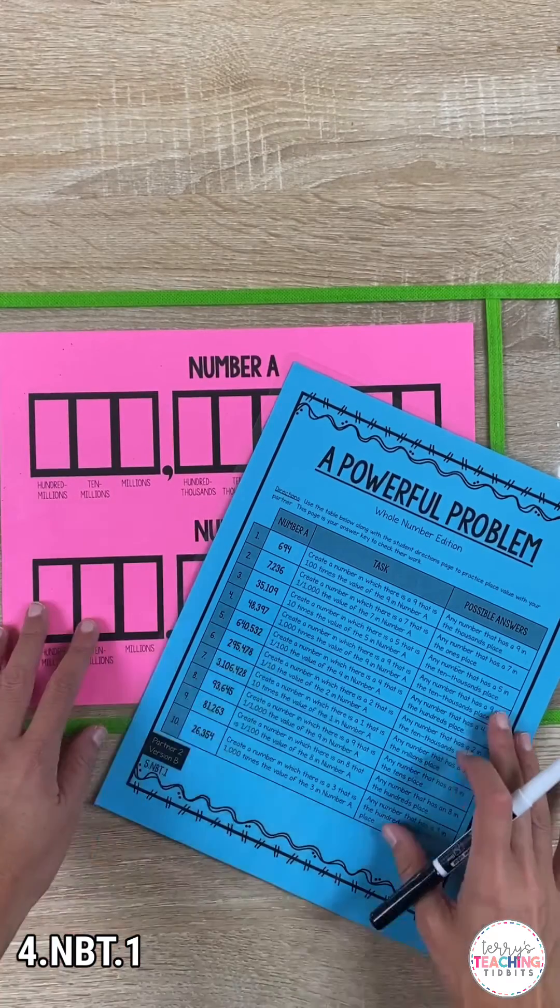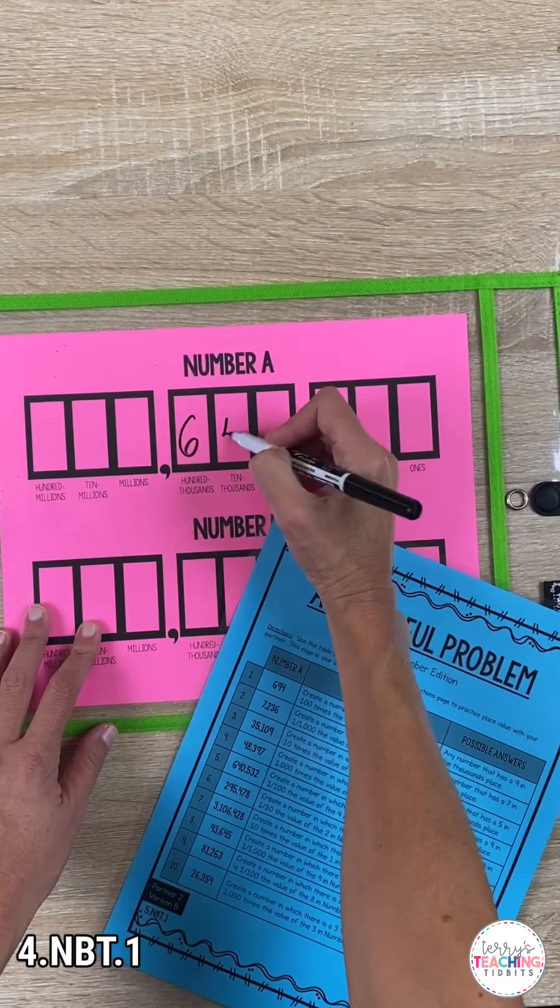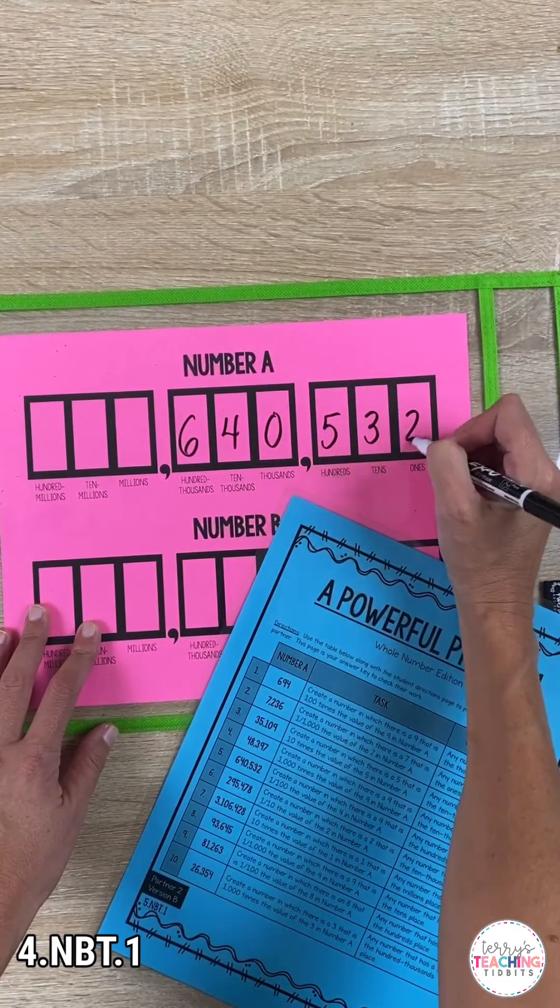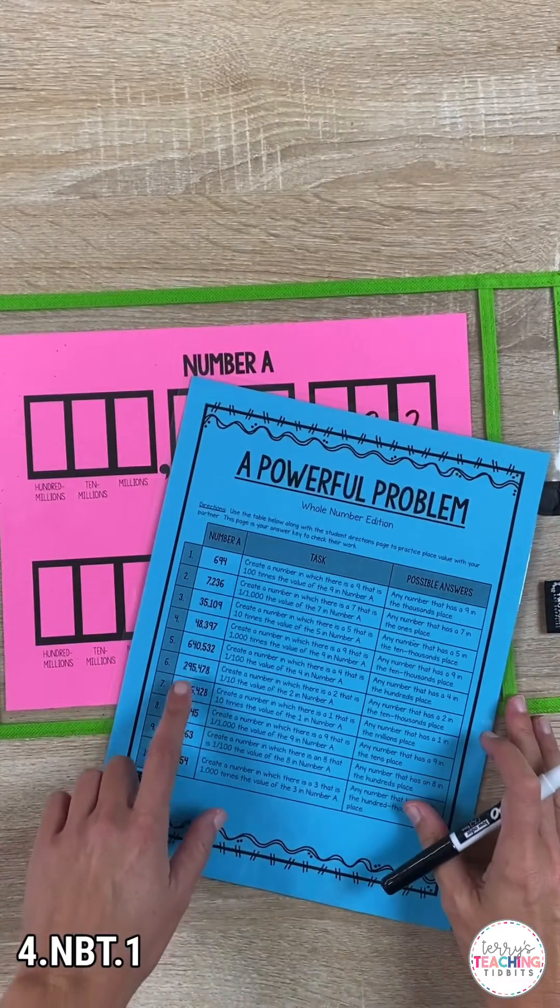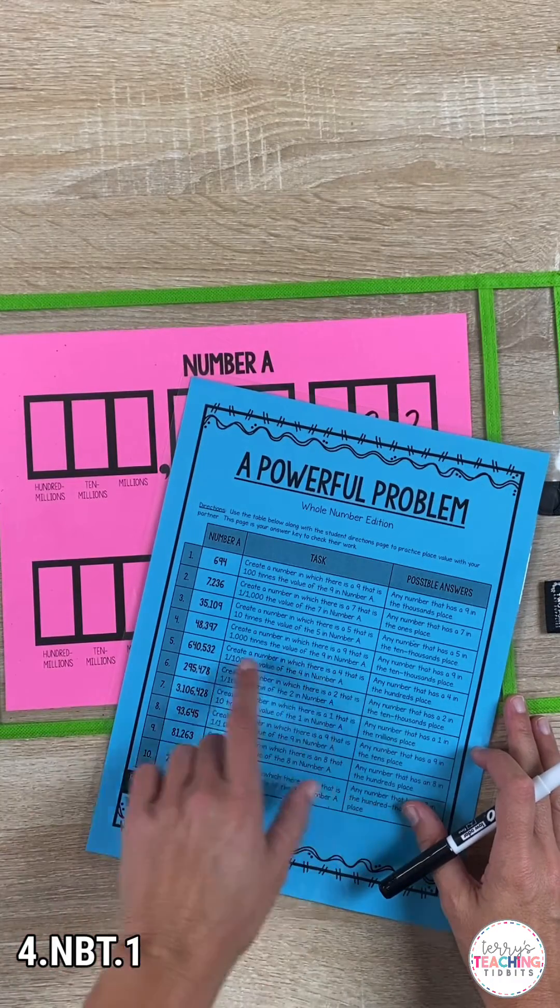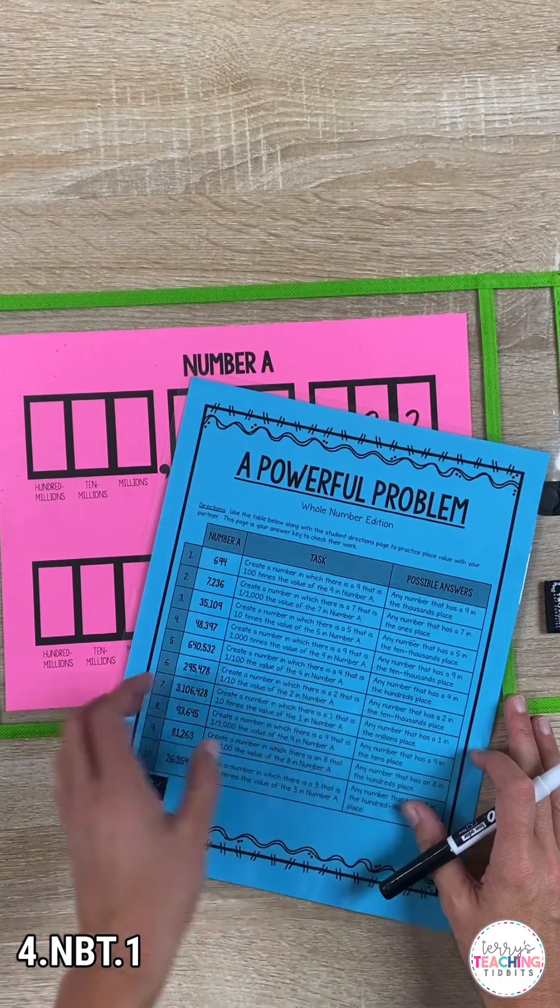In this next example, have students write the number 640,532 in number A. Then have them create a number in which there is a 4 that is 1/100th the value of the 4 in number A.